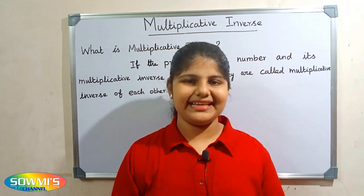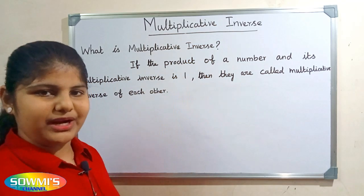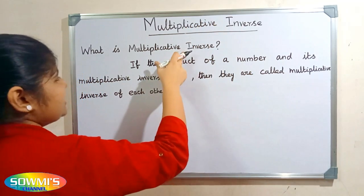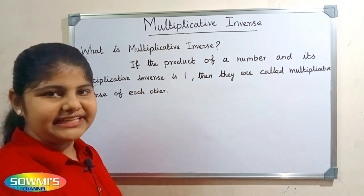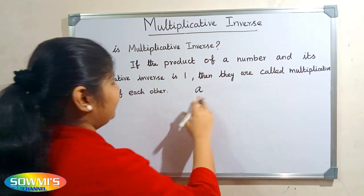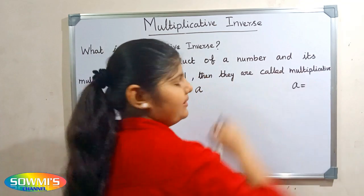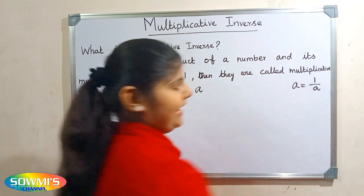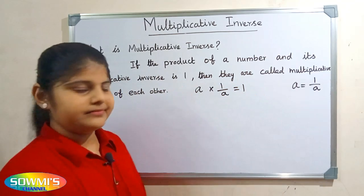Hi friends, welcome to Swami's channel. In this video I'm going to teach how to find multiplicative inverse. Multiplicative inverse is one of the properties of multiplication. Another name of multiplicative inverse is reciprocal. This property says that if the product of a number and its multiplicative inverse is 1, then they are called multiplicative inverse of each other. To find the multiplicative inverse of a given number, just write 1 divided by the given number, so the reciprocal of a is 1 by a.